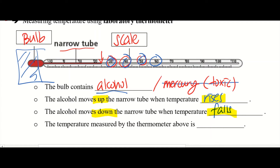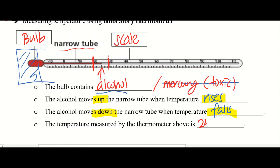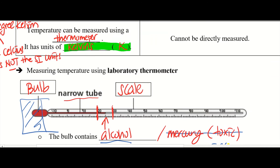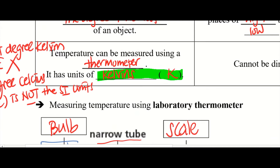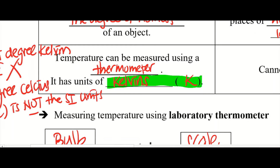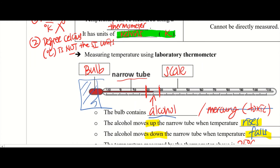The temperature measured by the thermometer — here we are tasked to read this exact temperature. It's exactly in between 20 and 30, so it must be exactly 25 degrees Celsius.